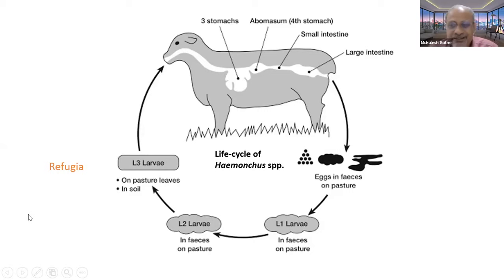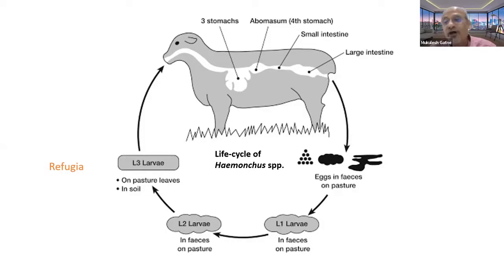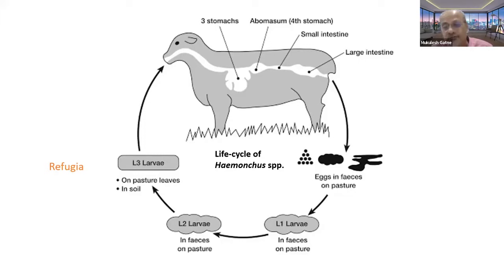What is meant by refugia? Refugia are the third-stage larvae present on the pasture that have been born from nematodes which have not been exposed to anthelmintic, or have been minimally exposed, so they remain susceptible. These L3 stages on pasture born from worms not multiply exposed to anthelmintic constitute a susceptible population — that is refugia.